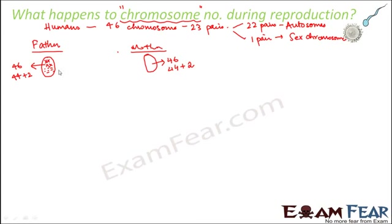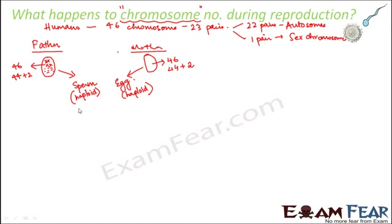During sexual reproduction, the father contributes the sperm — the male sex cell or male gamete — and the mother contributes the egg — the female sex cell or female gamete. The sperm and egg are haploid; they do not have 46 chromosomes but only half that number, a total of 23 chromosomes. These 23 chromosomes consist of 22 autosomes and 1 sex chromosome.